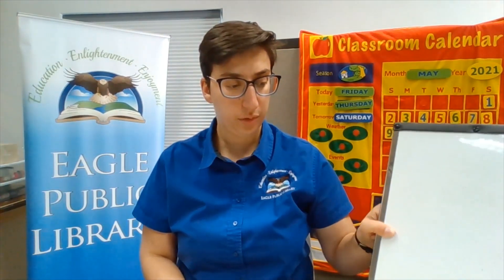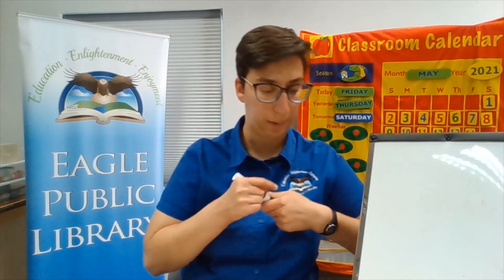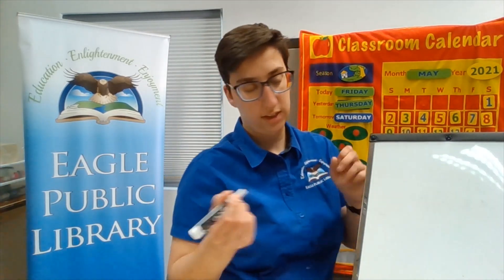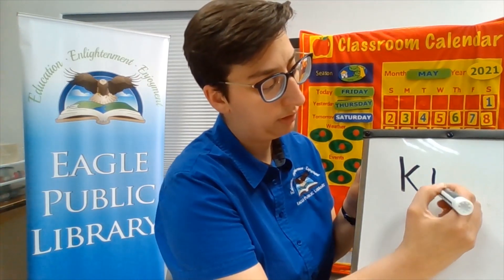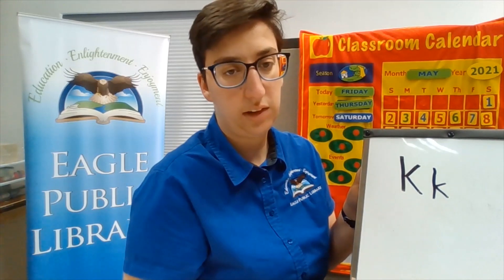So, the letter for today is K. Do you know anything that starts with K? Besides kangaroo. There's one in our book today, and I'm going to show you in just a minute. But first, I'm going to show you how to write the letter K. This one's pretty easy — it's all straight lines. We go big line, little line, little line. That makes a K. Same thing: big line, little line, little line.